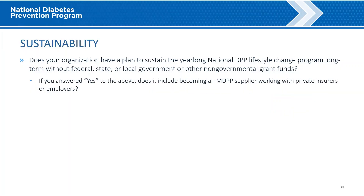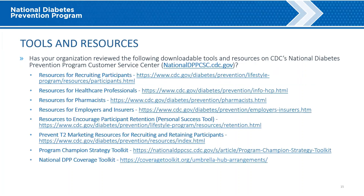Sustainability. Do you have a sustainability plan for your program? If so, does it include becoming an MDPP supplier, working with private insurers or employers? There are many resources available to help with program sustainability, including resources for recruiting participants, healthcare professionals, pharmacists, employers and insurers, encouraging participant retention, and marketing to recruit and retain participants. There are additional resources on umbrella arrangements available on the National DPP Coverage Toolkit website.